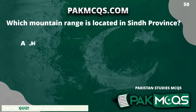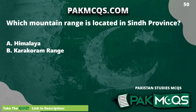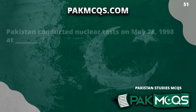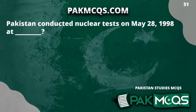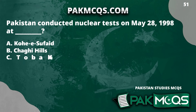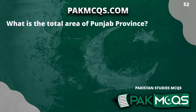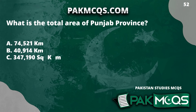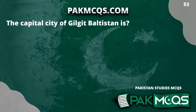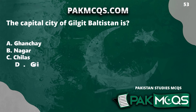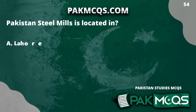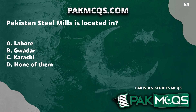Which mountain range is located in Sindh Province? Kirthar Range. Pakistan conducted nuclear tests on 28th May 1998 at Chaghi Hills. What is the total area of Punjab province? 205,344 square kilometers. The capital city of Gilgit-Baltistan is Gilgit. Pakistan Steel Mills is located in Karachi.